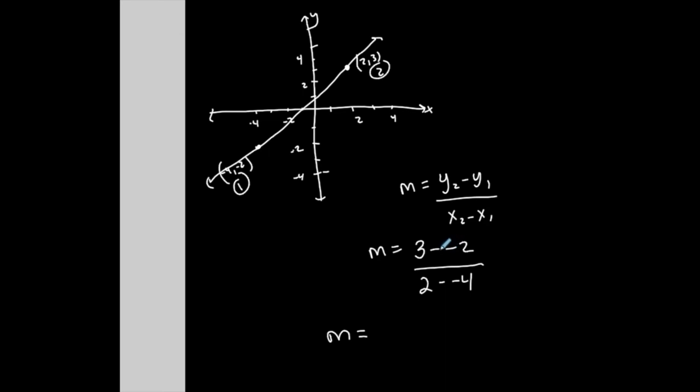Simplify: 3 minus negative 2 becomes a plus, right? Negative negative. 3 plus 2 is 5. 2 minus negative 4 becomes 2 plus 4, which is 6. So my slope here is positive 5 over positive 6.